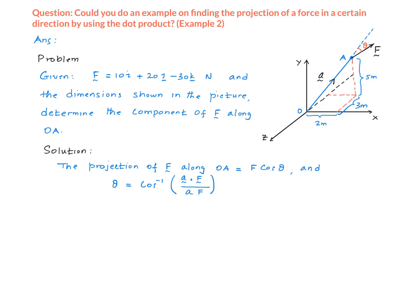First, we know that the component of F along OA is simply F cosine theta. You might ask, how come we are not using this angle? If the question had been to find the projection of F along AO, that's the angle we would have used, but the question is to find the projection along OA, not AO.